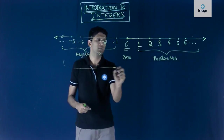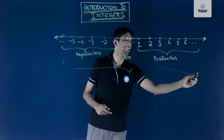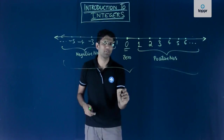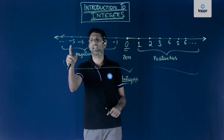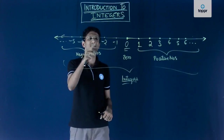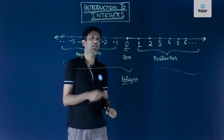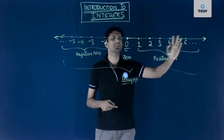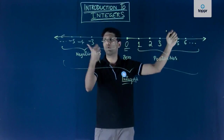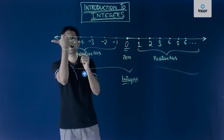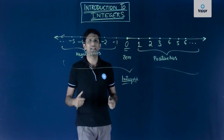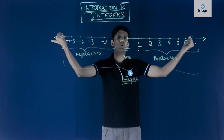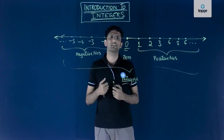When you combine all the positive numbers, 0, and all the negative numbers, what you get is the set of integers. So the list of integers consists of numbers such as minus 5, minus 4, minus 3, minus 2, minus 1, 0, 1, 2, 3, 4, 5 and so on on both sides. Even beyond minus 5 you have minus 6, minus 7, and so on. This number line extends on both sides without ever stopping.